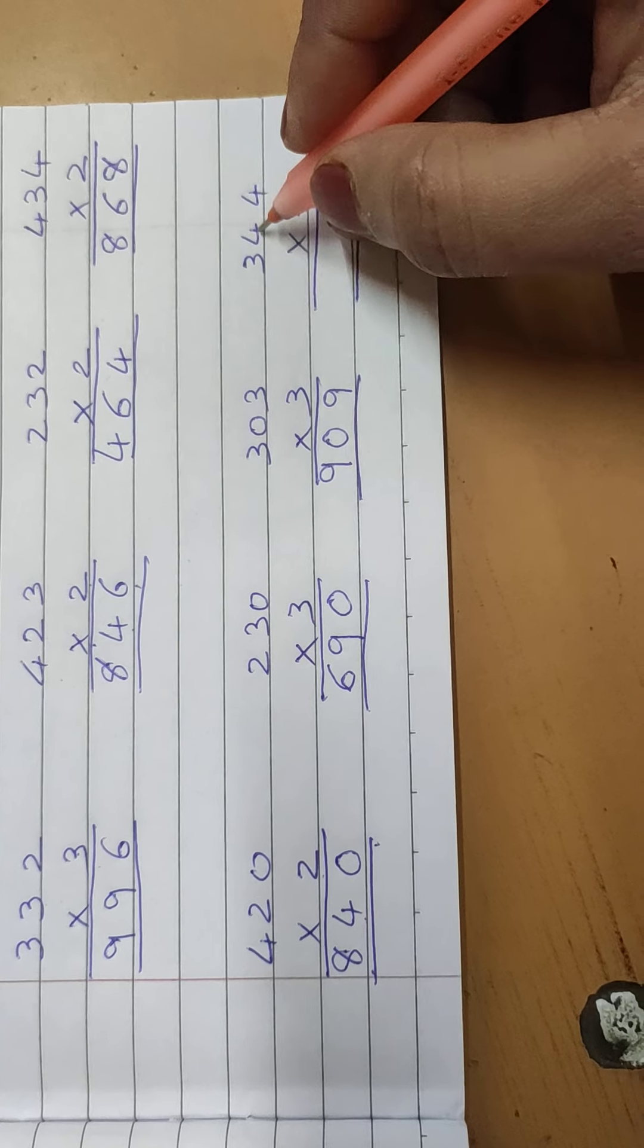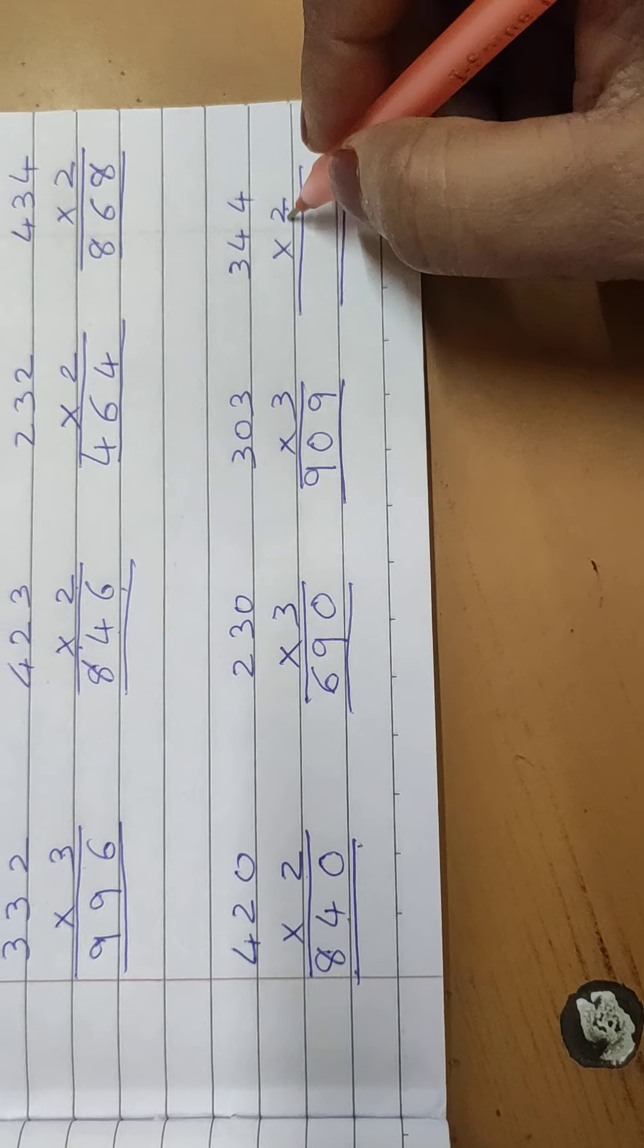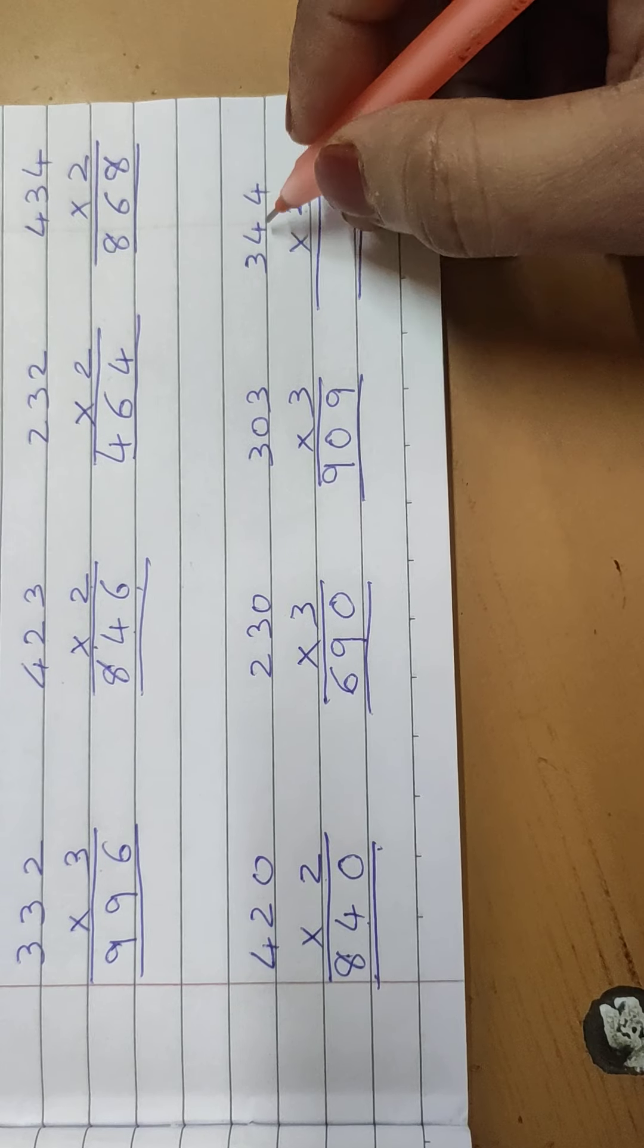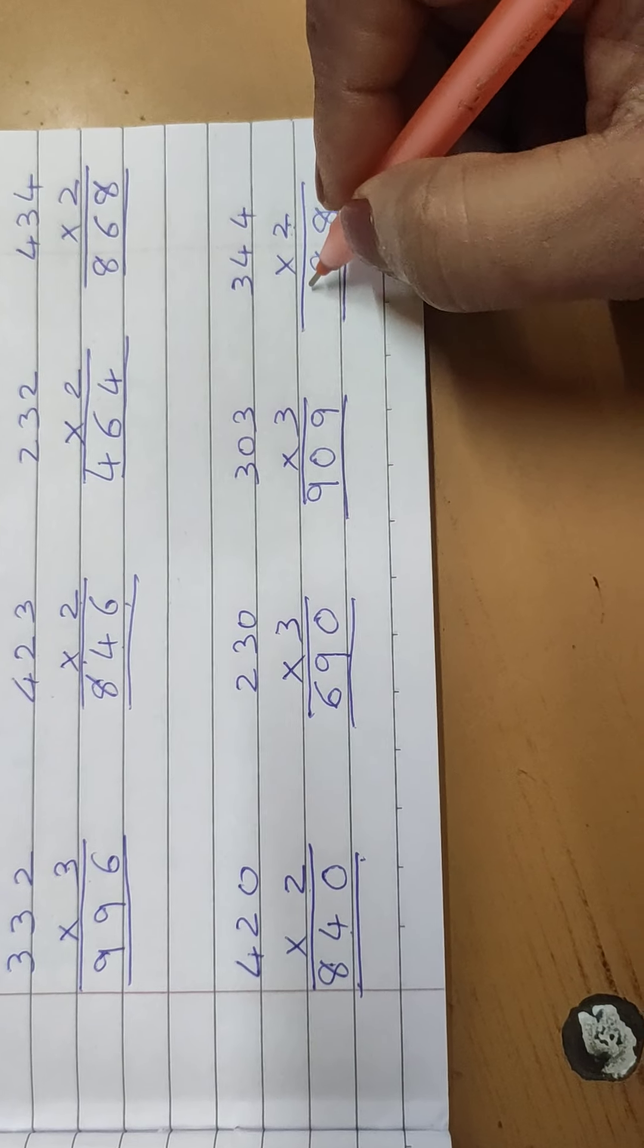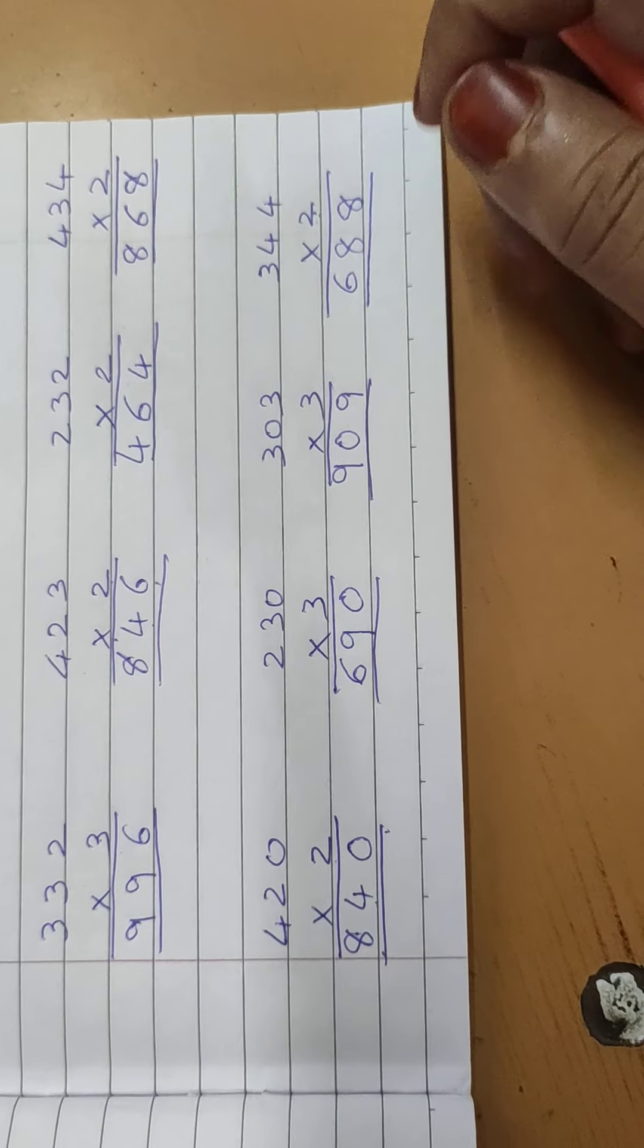Now 344 multiply by 2. 2 fours are 8, 2 fours are 8, 2 threes are 6. 688.